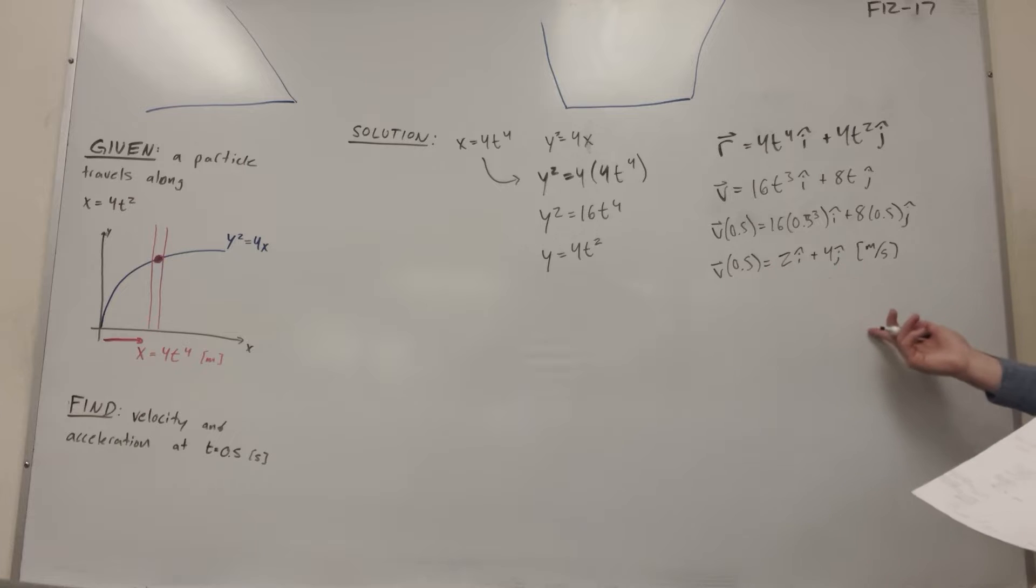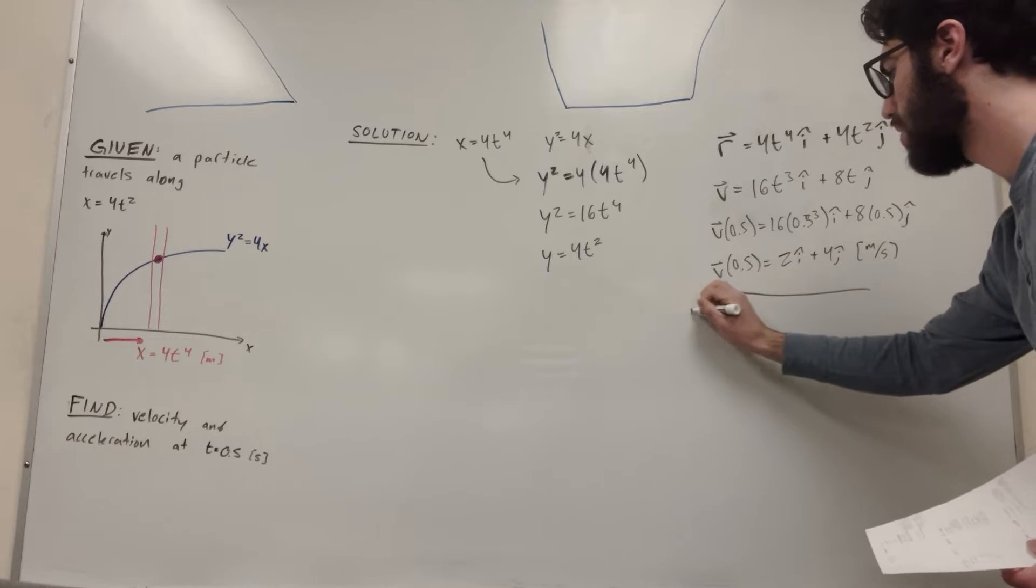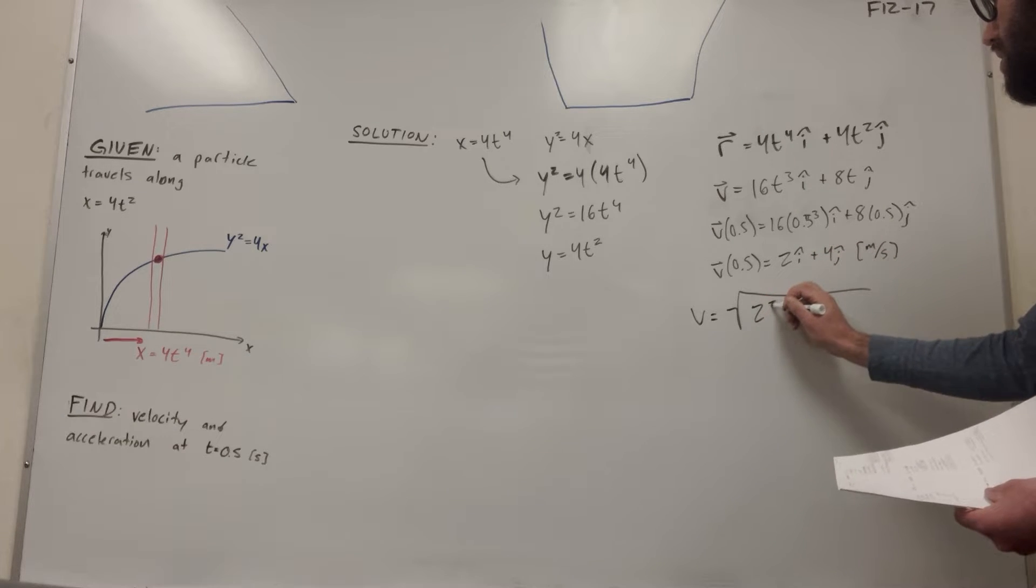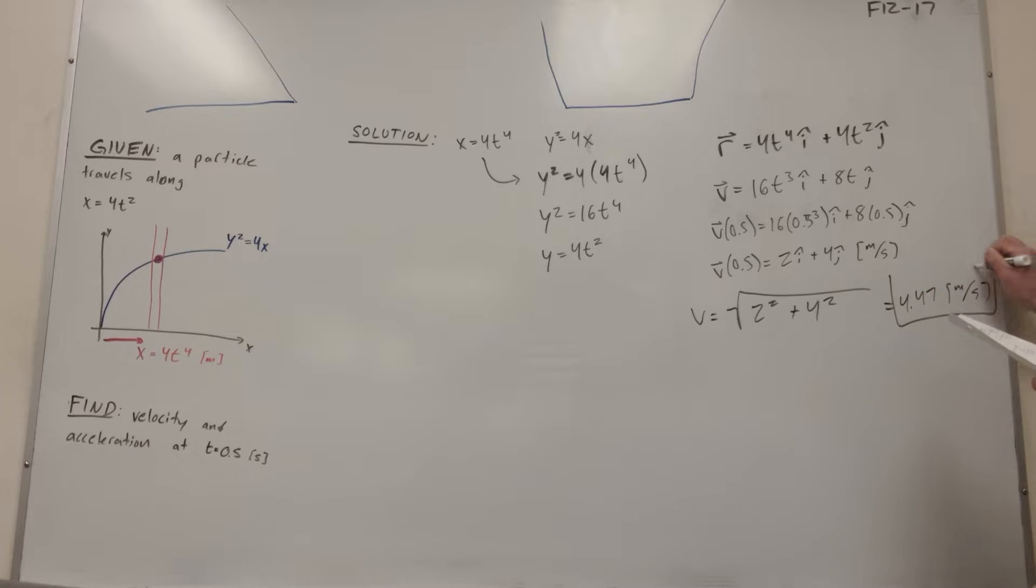So we have the velocity vector, but we need to find the magnitude. So to find the magnitude, we're just going to take the square root of i squared plus j squared. And you do this, and you get that this is equal to 4.47 meters per second. And that is your answer to part a.